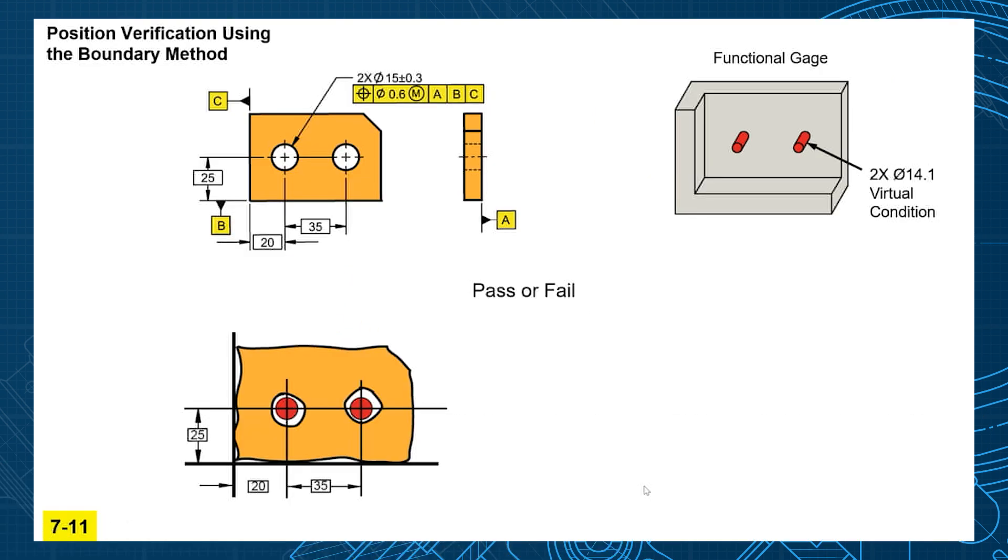Now the problem with a functional gauge is it only gives you one answer, either pass or fail. It either passes the gauge or it fails the gauge, and you don't know which hole failed and you don't know how much it's out.